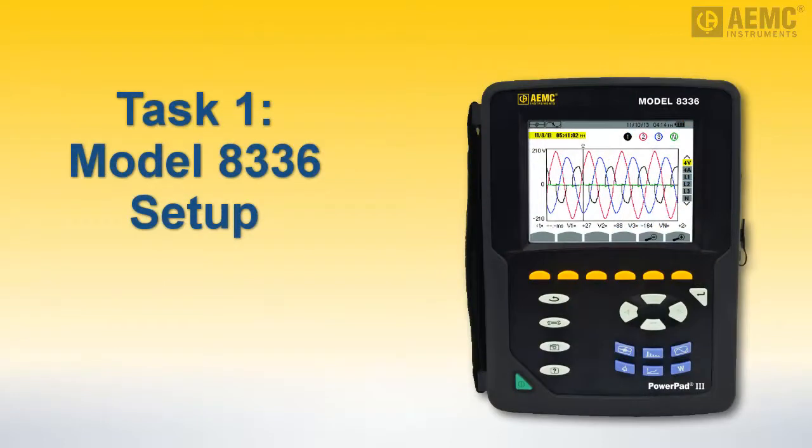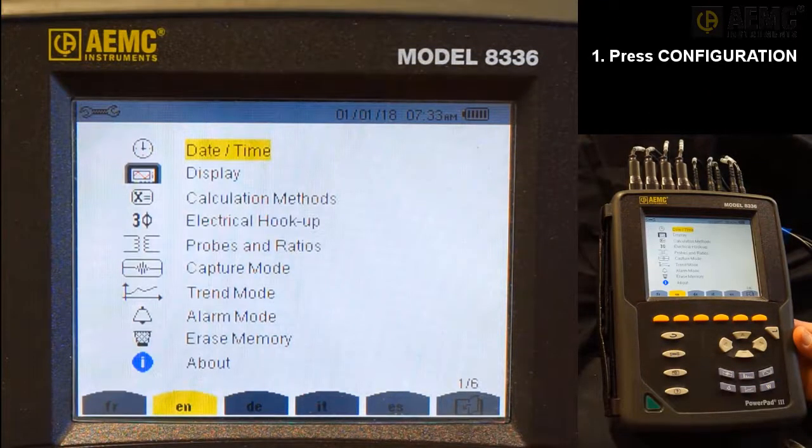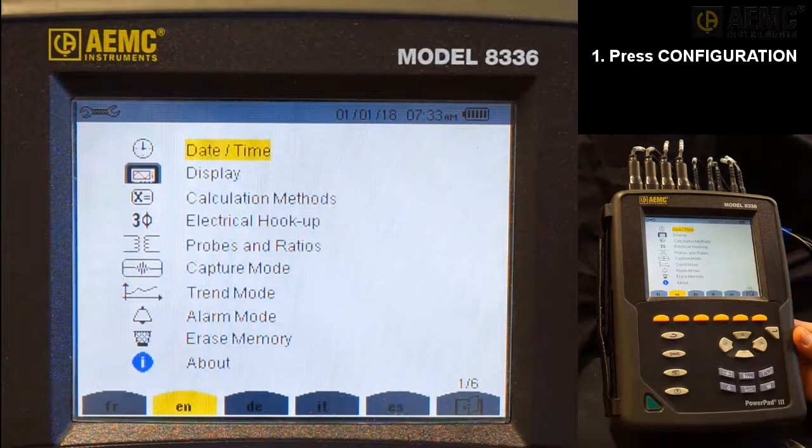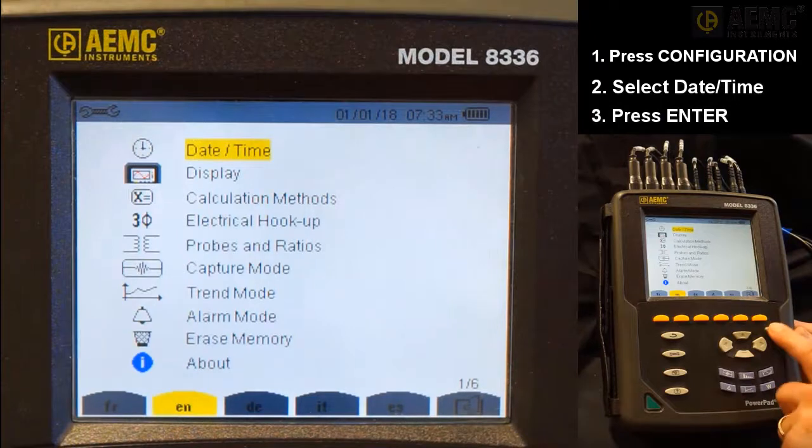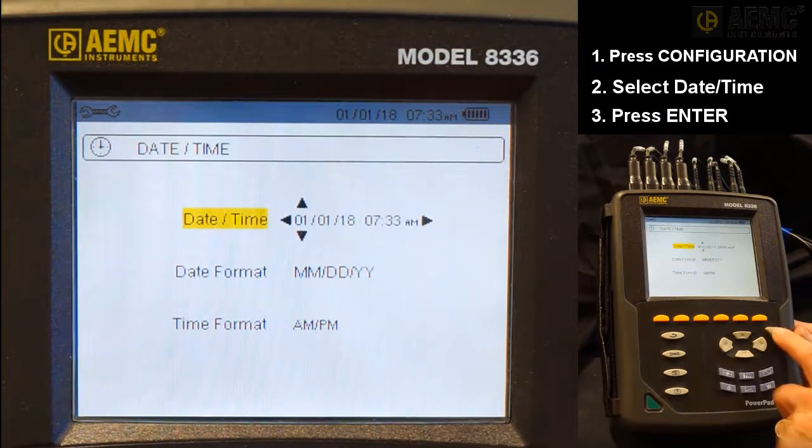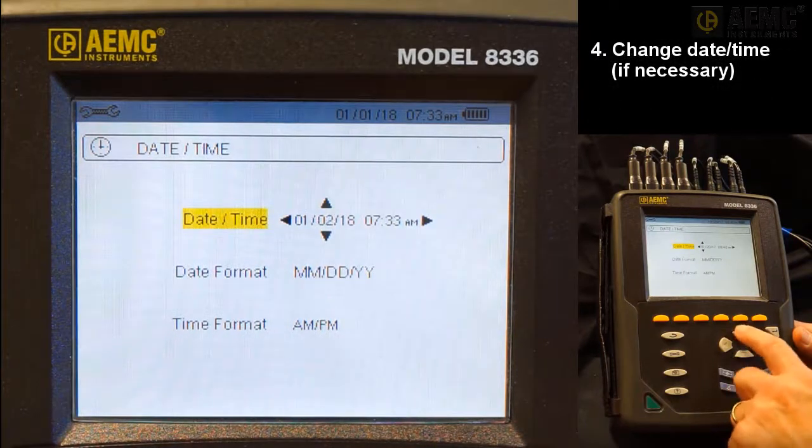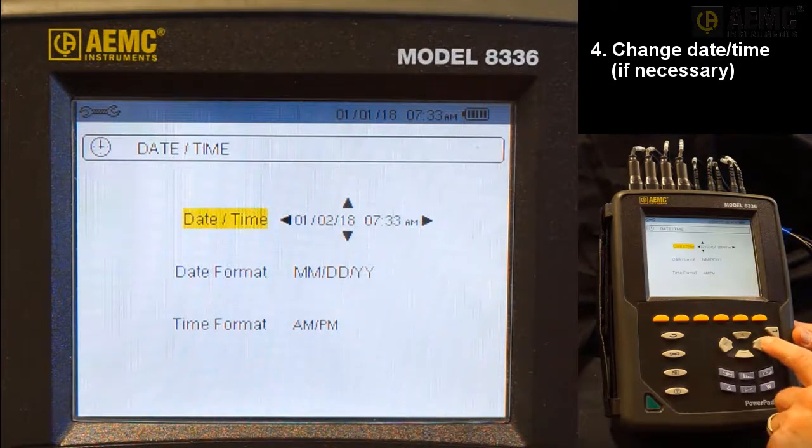Our first task involves setting basic instrument configuration parameters. With the instrument on, press the configuration button, labeled with a wrench icon, to display the configuration options screen. By default, the date-time option is selected. If not, use the arrow buttons to highlight it. Then press the Enter button to display the date-time screen. Check the displayed date and time. If it differs from the current date and time, press Enter to select the settings. Then use the arrow buttons to change the date and or time. When finished, press Enter.